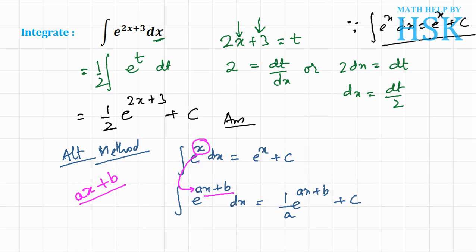the difference in both cases is just the expression ax plus b, obtained by multiplying x by a and adding b. The result is 1 upon a times e to the power of ax plus b plus c. We proceed to integrate e to the power of ax plus b just as we integrate e to the power of x, but because x has coefficient a, we divide by a.